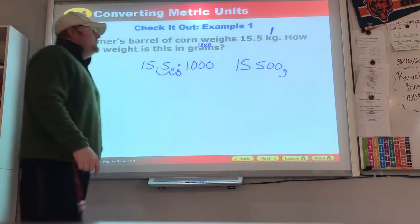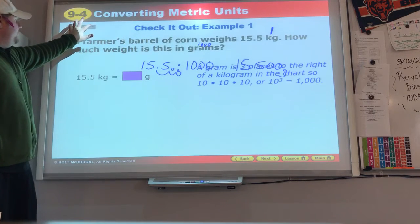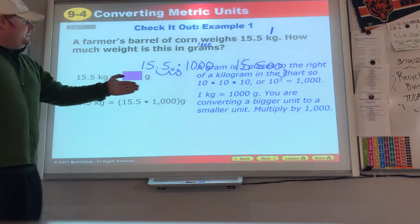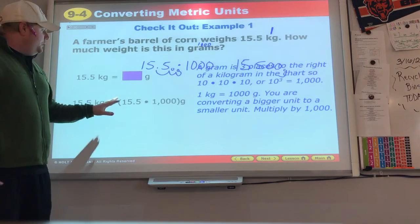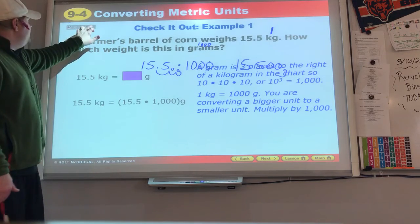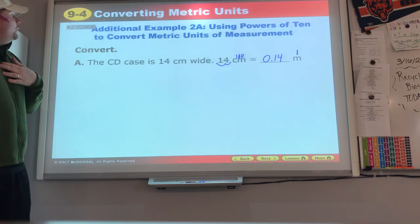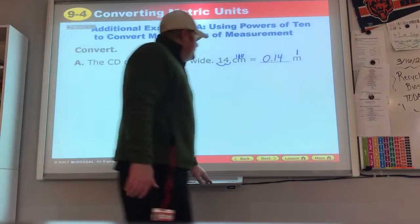Grams is fifteen point five kilograms. We watch what they do over here. They get that one kilogram is one thousand grams. You can see that in the back of your book. So they know big to small times one thousand and they get their fifteen thousand grams.